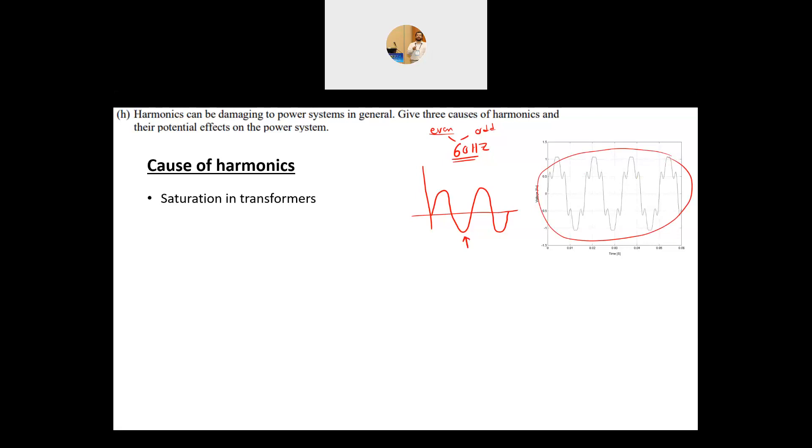The first cause is saturation in the transformer. The transformer itself, because of the saturation of the core, acts like a non-linear resistance in parallel with a non-linear inductor, so it produces some harmonics. When you have saturation, you produce more and more harmonics.